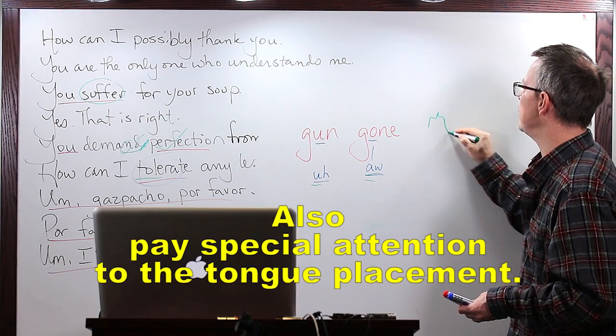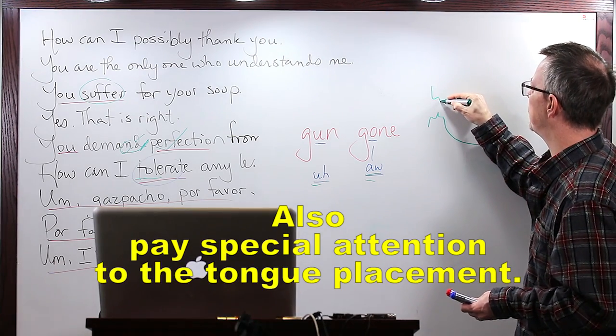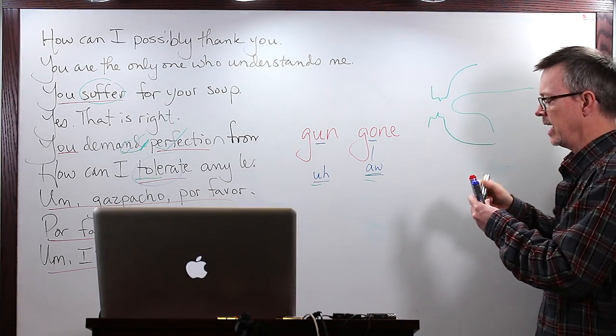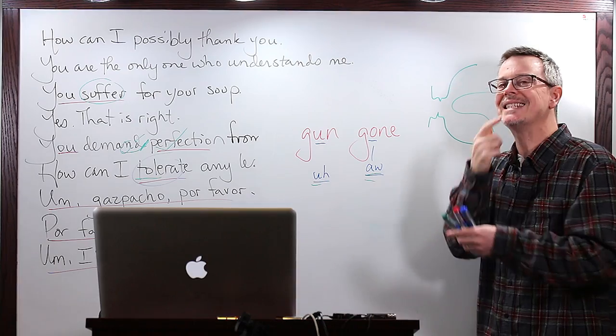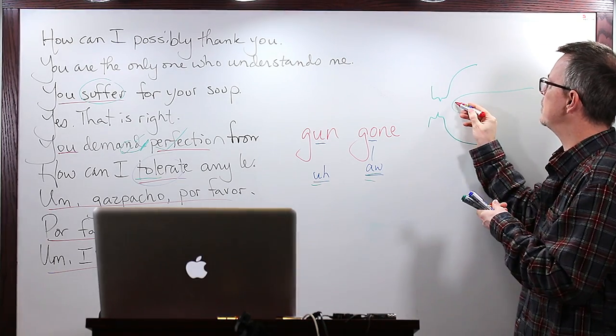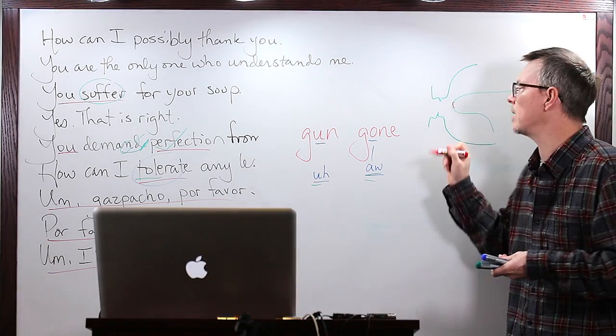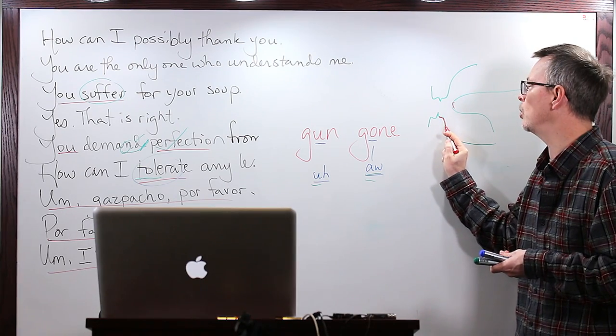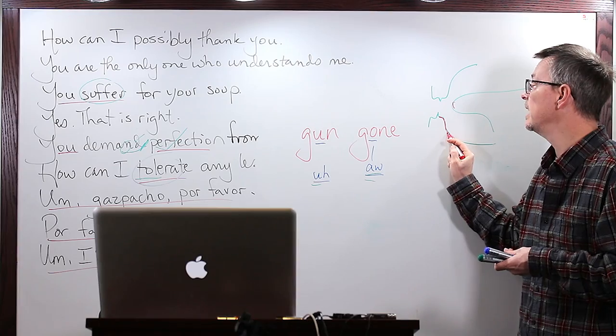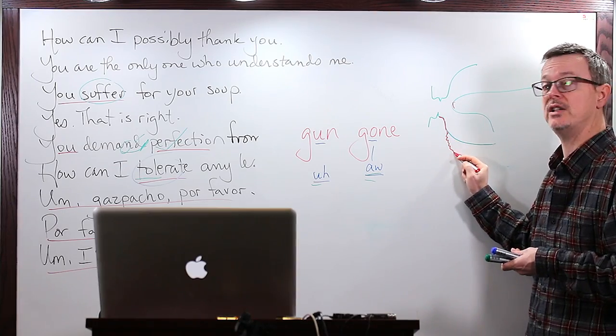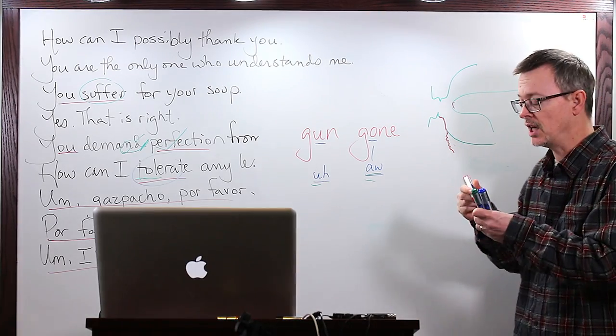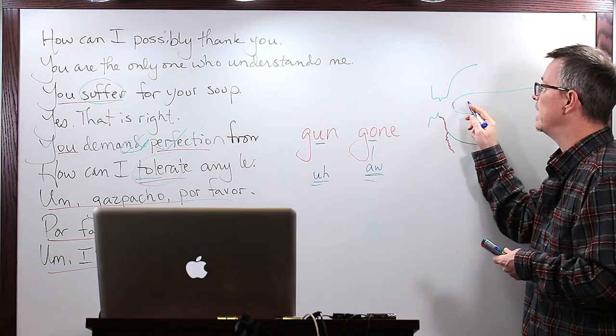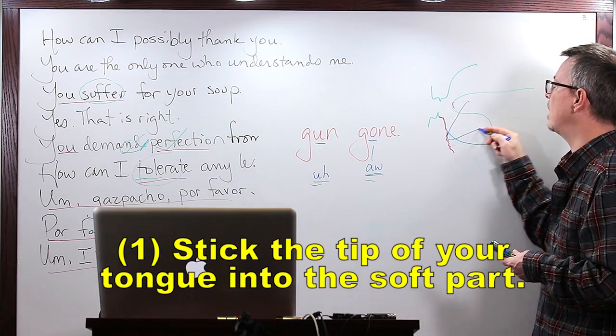So inside your mouth, these are your bottom teeth and these are your upper teeth. This is your tongue. Now if you take the tip of your tongue, the tip of your tongue, and you touch the bottom here, it's like really hard, it's like bone. And then like right here it starts to get really soft. There's skin but it's really soft.